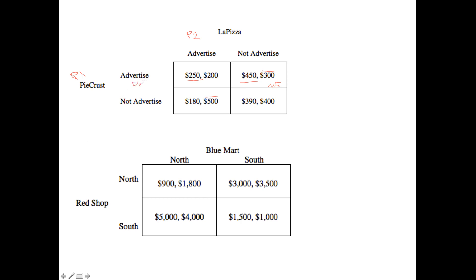In the case of LaPizza, we notice that there is no dominant strategy. If PieCrust were to advertise, the best response of LaPizza would be to not advertise. However, if PieCrust were to not advertise, the best response of LaPizza would be to advertise. Therefore, LaPizza's decision depends on the overall action of PieCrust — that's how you identify dominant strategies.